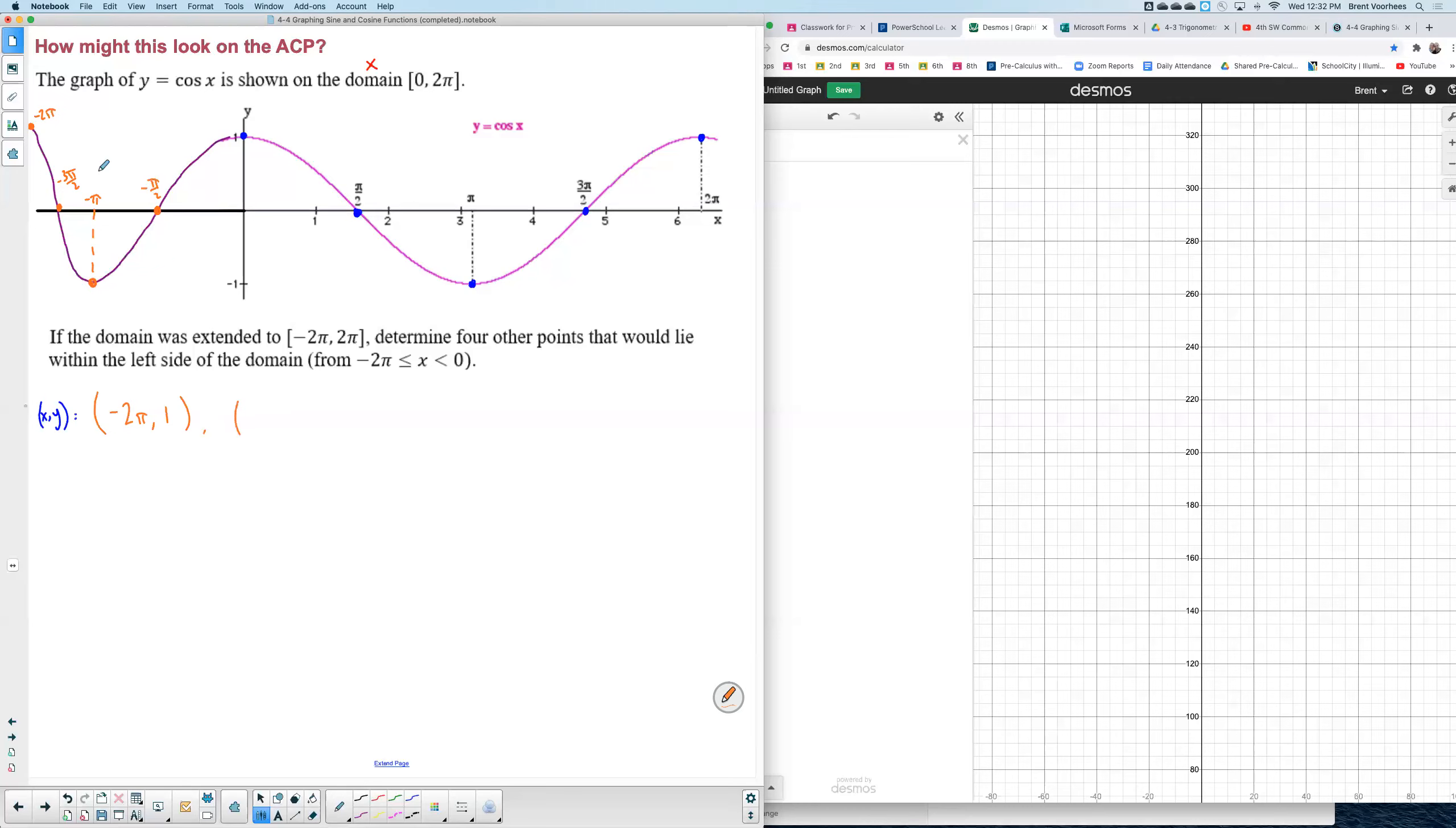A second would be at negative three pi over two with a height of zero. A third point would be an x value of negative pi.